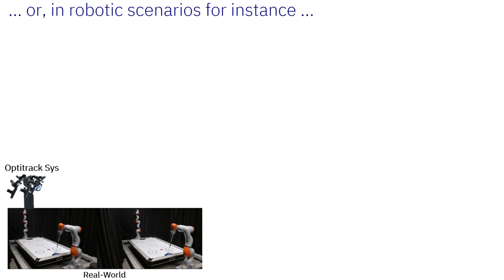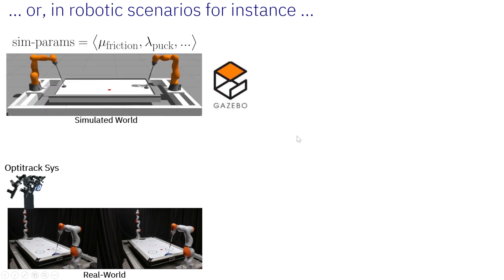Imagine you have an air hockey problem like the one we faced here. We had two robot arms, a table, and a puck. The robot could move and actually hit the puck, and its goal is to score a goal against the opposing robot. Controlling things in the real world is very complicated, so we are going to work in a simulated world to learn the behavior and then transfer it into the real world.